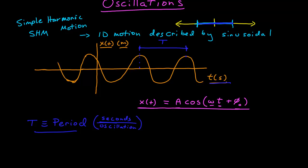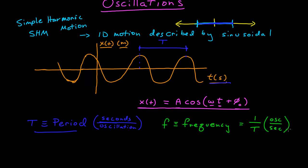Another important quantity is the frequency. The frequency is equal to the inverse of the period, so it has units of one over seconds, or oscillations per second. The frequency tells you how many oscillations the system undergoes in one second, or what fraction of an oscillation it undergoes in one second.